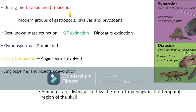Insect and flowering plant co-evolution is a very important concept to remember. We also see host-parasite co-evolution, and we will see grass-mammal co-evolution in the next topic. Amniotes are distinguished by the number of openings in the temporal region of the skull. They are classified into synapsids and diapsids — synapsids are the ancestors of mammals and diapsids include the dinosaurs.